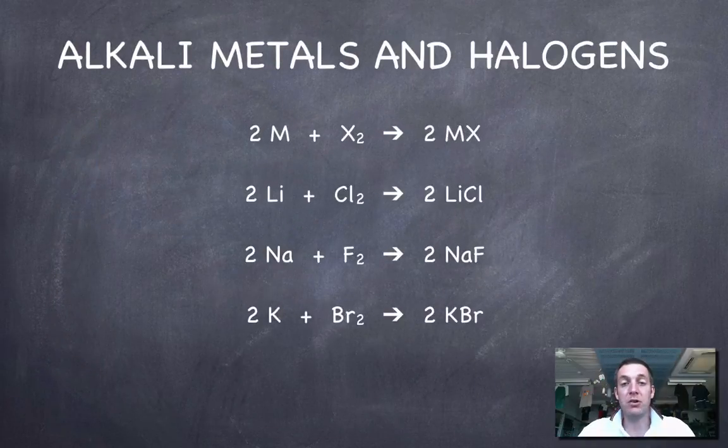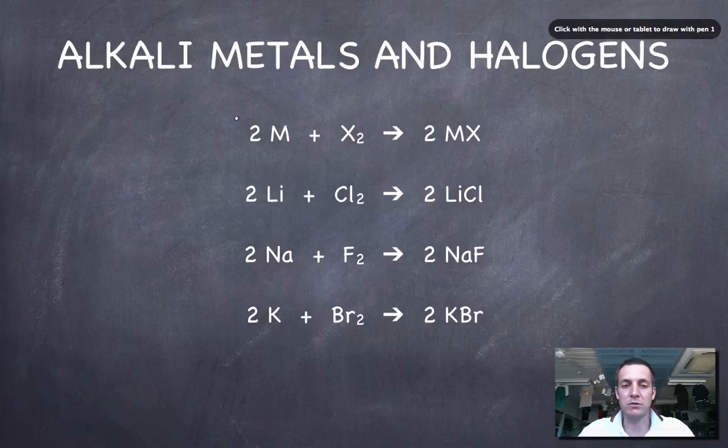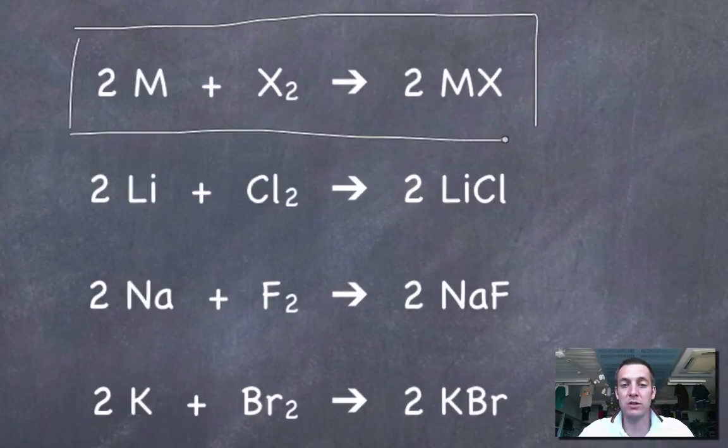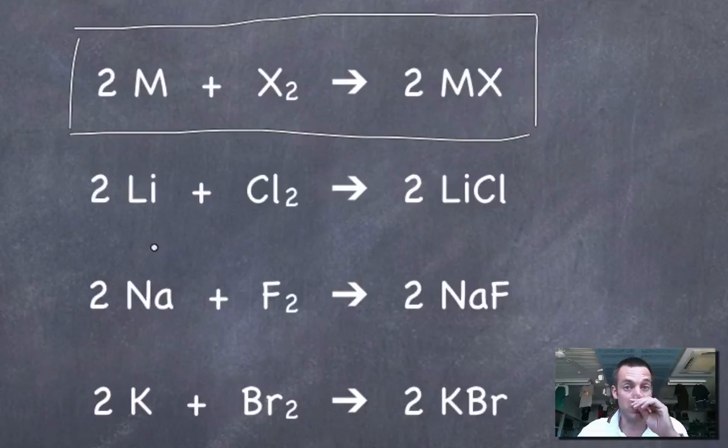Alkali metals also react with halogens, and there's a general equation for this too. I would definitely recommend learning this general equation. If we remember that the halogens always form diatomic molecules like X₂ - that is to say Cl₂, F₂, Br₂ and so on - and we ought to be able to figure out that these X atoms form X⁻ ions.